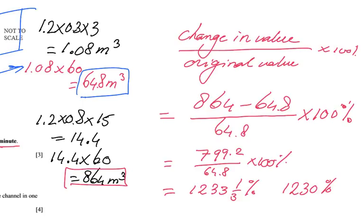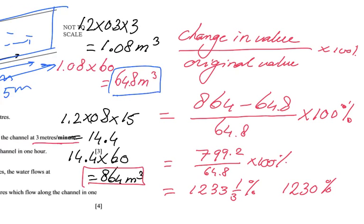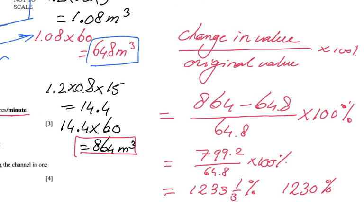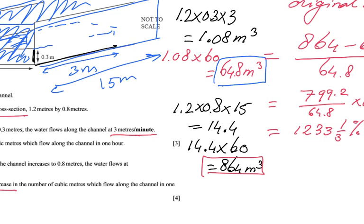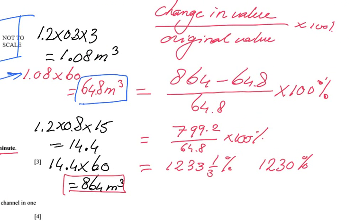So the percentage increase or decrease is that change in value over the original value. To find the change in value, I first had to find this number here, 864. So I first had to find that value, the new amount of water that is leaving the channel, so I can find the difference. 864 minus 64.8 over the original value times 100 percent. And then make sure that you either give it as a fraction or you round it correctly to three significant figures.